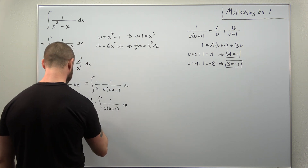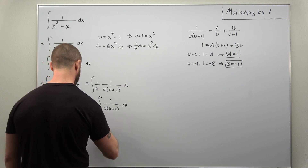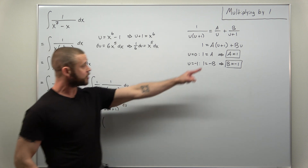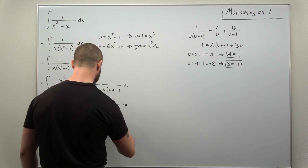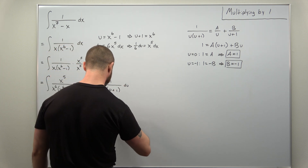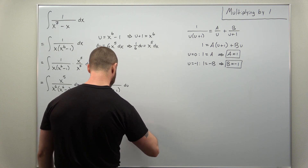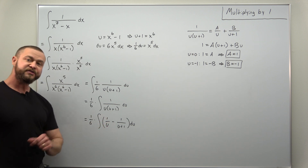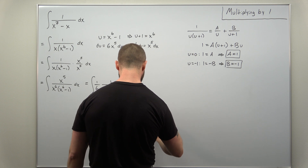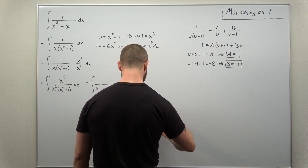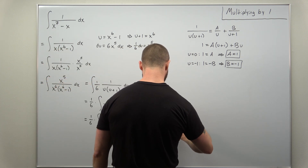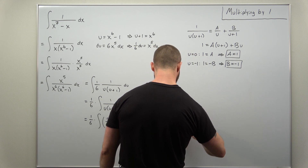We can now go ahead and integrate. Rewriting using our partial fraction decomposition, we split this rational function into two partial fractions: A is one so we have 1 over u, and B is negative one so we get minus 1 over (u plus one). This is now really simple to integrate — you're going to get two natural log terms. Keeping the 1/6 out front: natural log of u minus natural log of (u plus one).